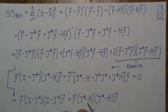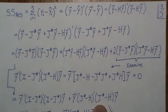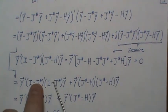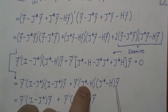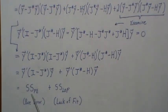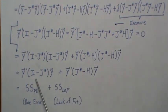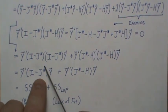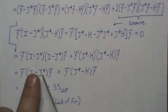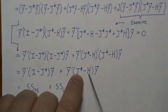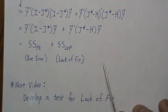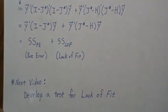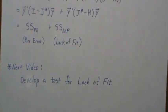We're left with: SSR = y^T*(J_star - H)*y + y^T*(I - J_star)*y. Each matrix is symmetric and idempotent after simplification. The term y^T*(I - J_star)*y is the sum of squares pure error - representing data fluctuating around group means. The term y^T*(J_star - H)*y is the sum of squares lack of fit - representing group means minus fitted values. In the next video we'll use these to develop a lack-of-fit test.